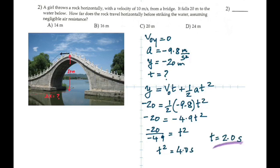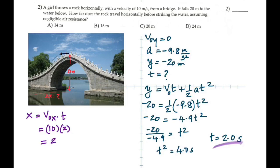Time is 2 seconds. Now let's think about the horizontal motion. The horizontal velocity is constant — it never changes. Gravitational acceleration has no effect on it. So if the velocity is constant, the only formula you have is displacement = velocity × time. X = V₀X × time = 10 × 2 = 20 meters.